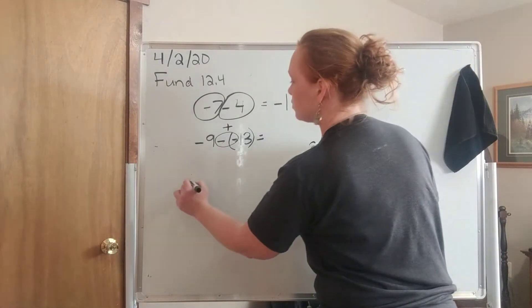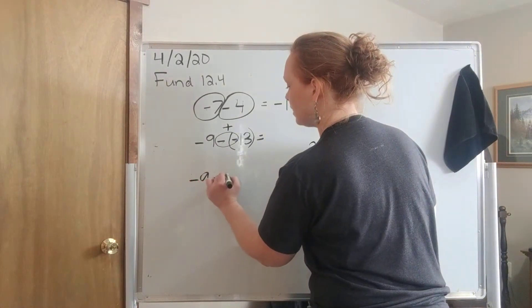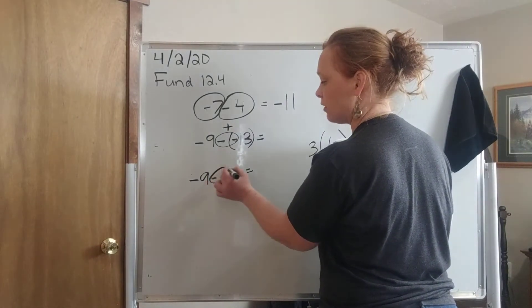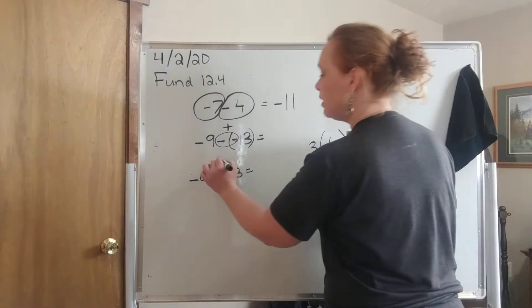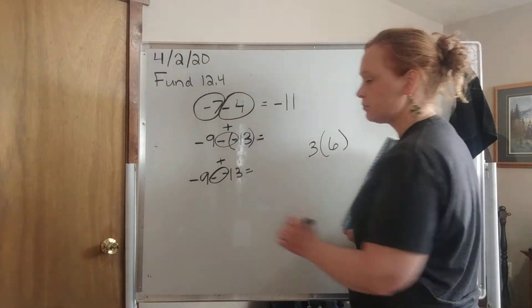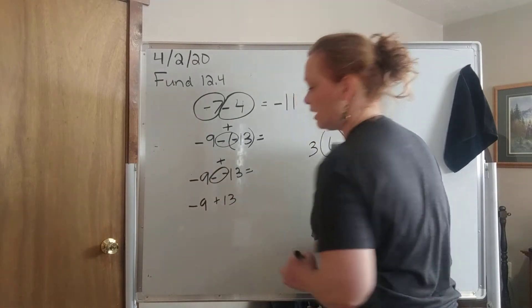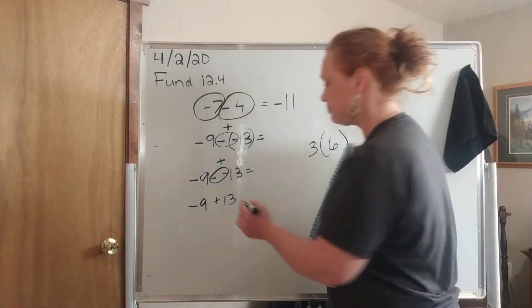So let me rewrite this problem. Negative 9 minus negative 13. When I see two negative signs right next to each other with nothing in the middle, I'm going to circle them and change it to a positive. Now I can rewrite this problem. Negative 9 plus 13. It's kind of strange, isn't it?